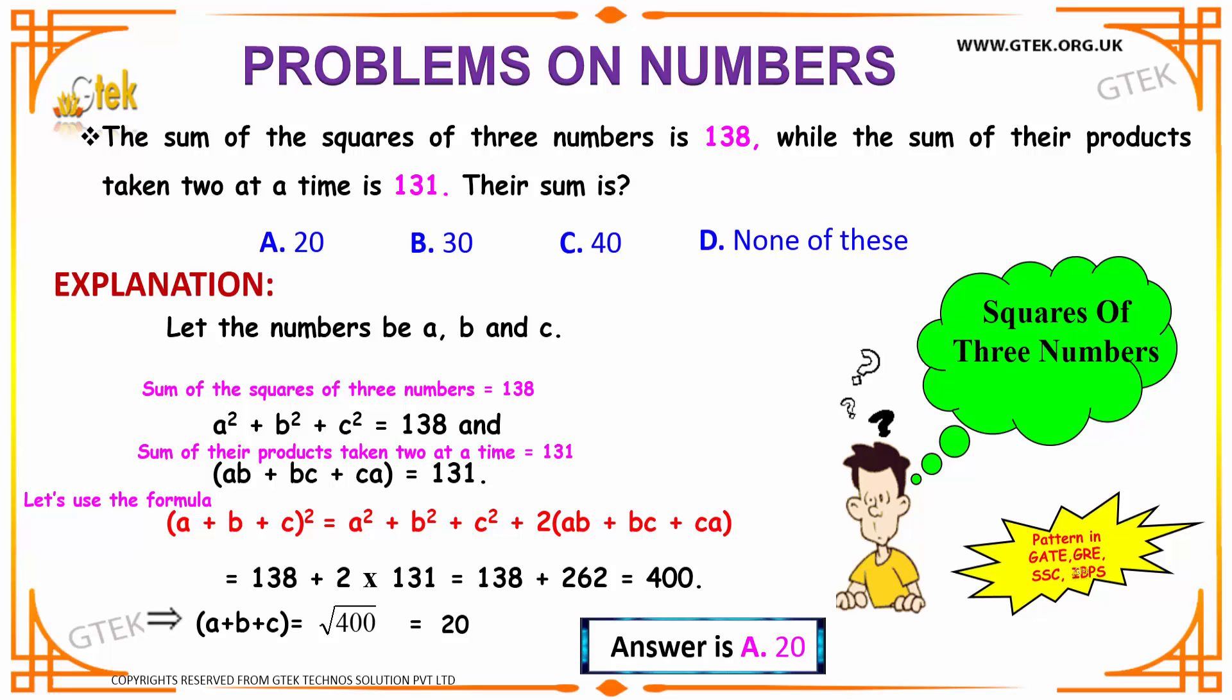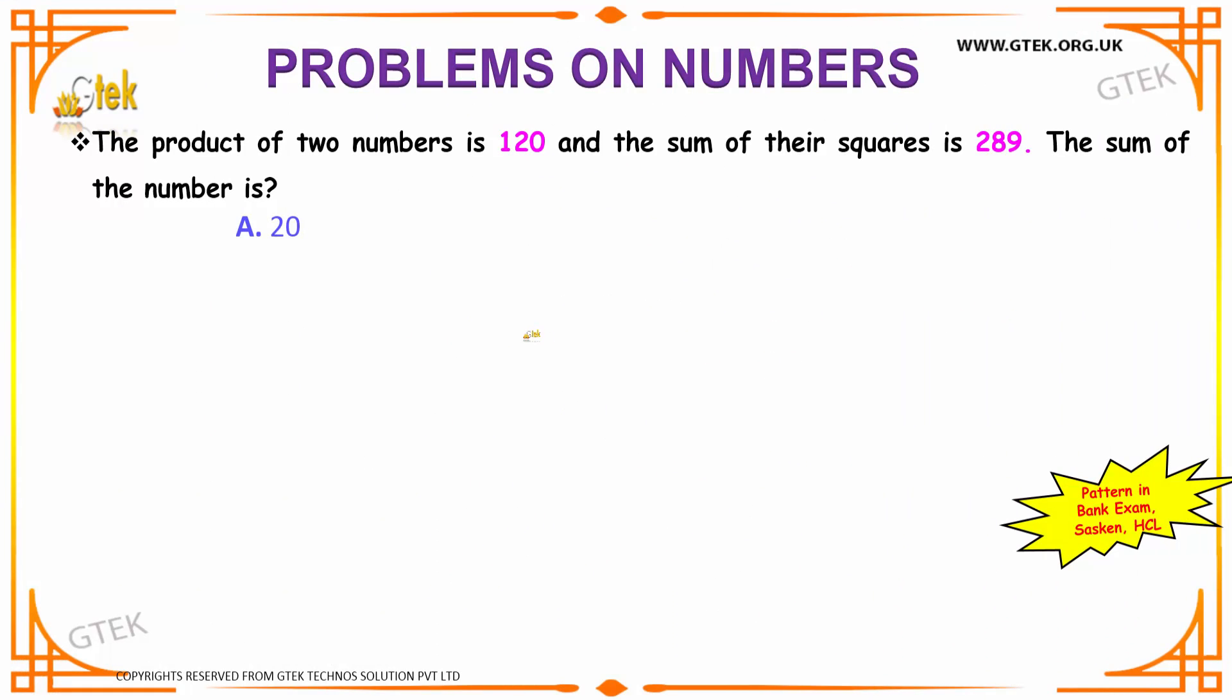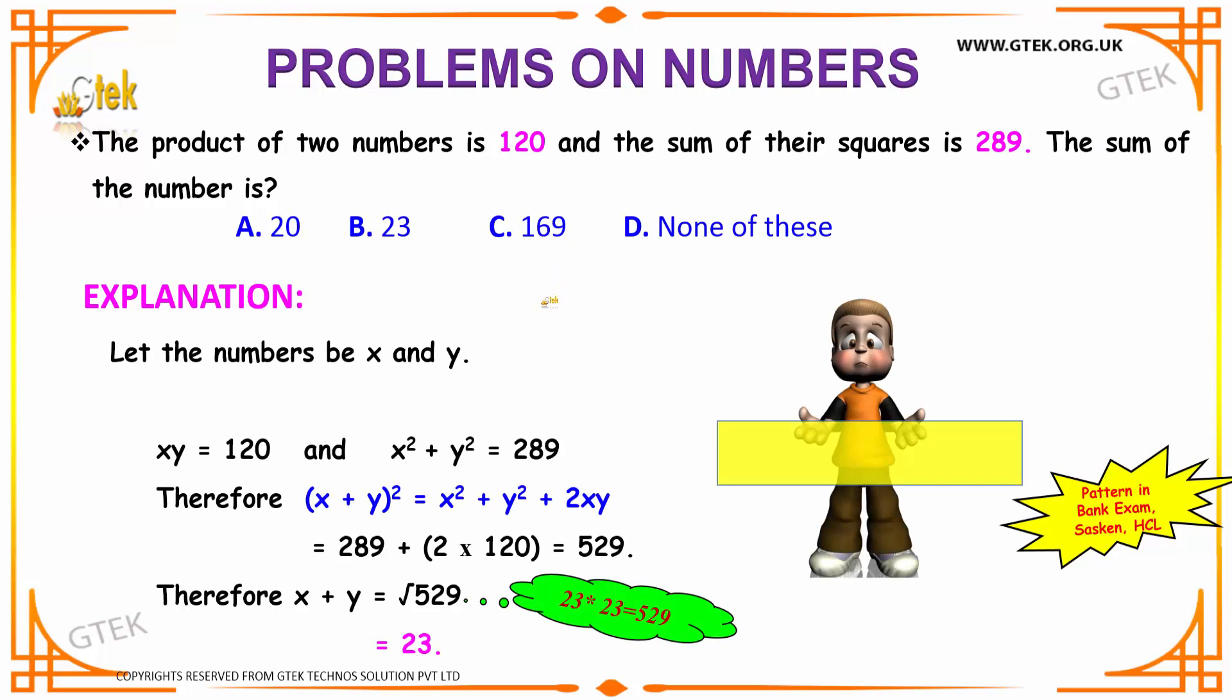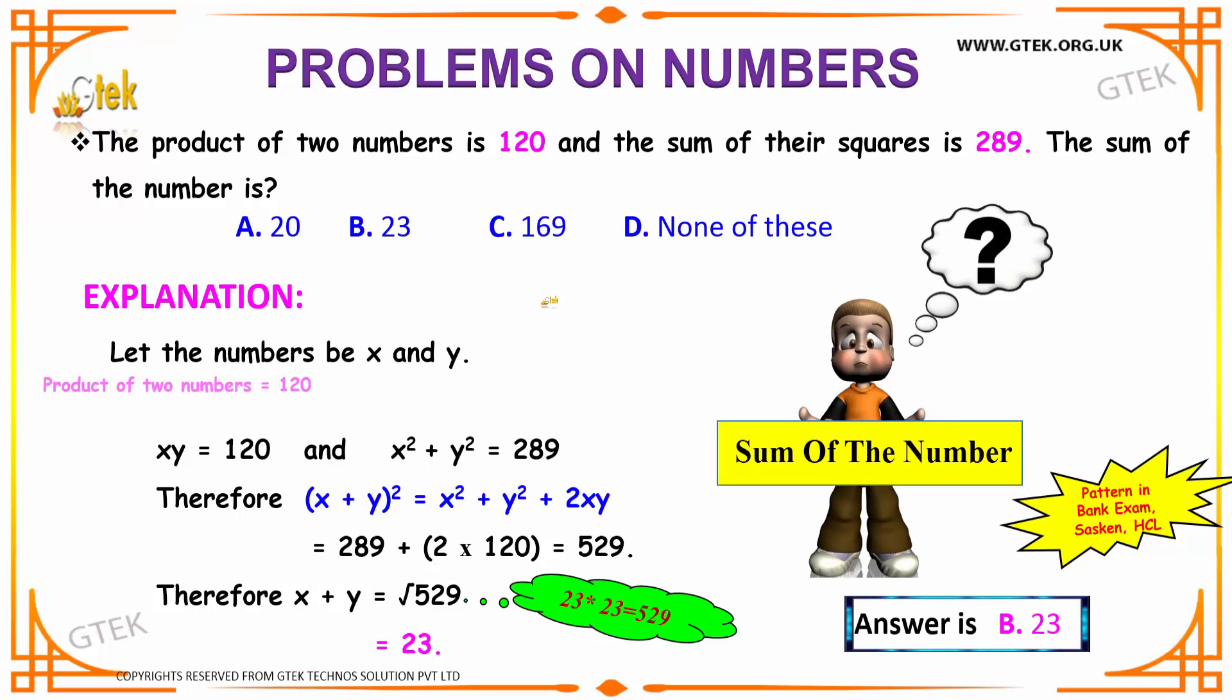Well, this is an important question as it has appeared in GATE, GRE, SSE, and IBPS. The product of two numbers is given to be 120 in our next example, and the sum of the squares is given to be 289. What will be the sum of the number?